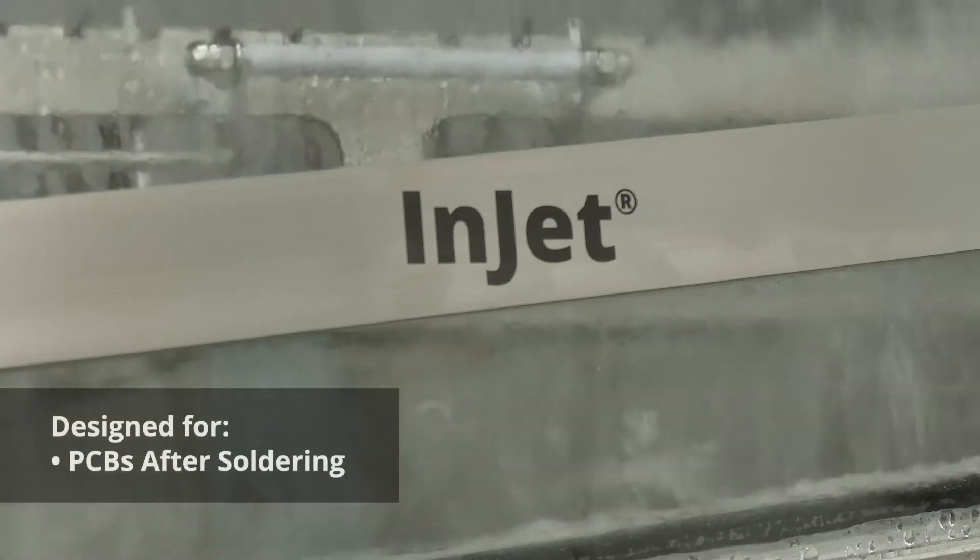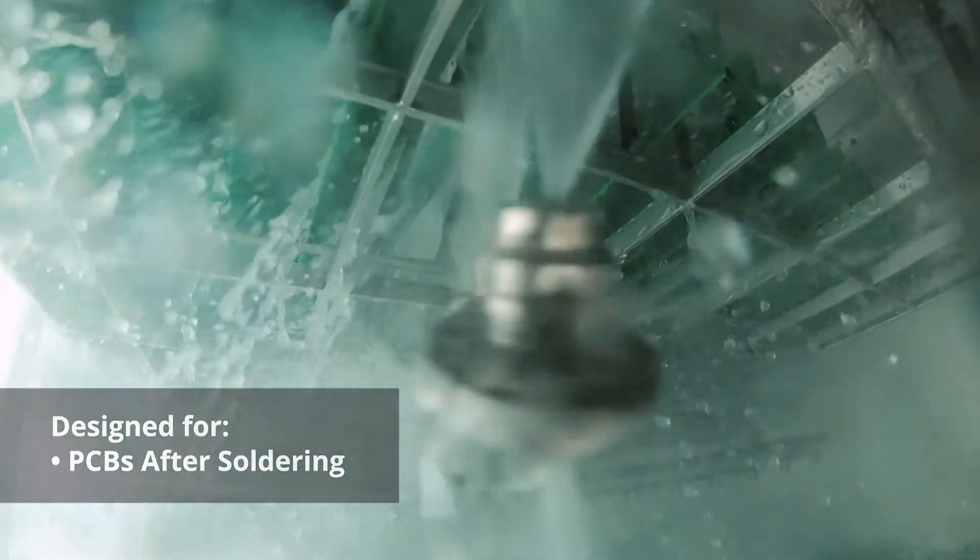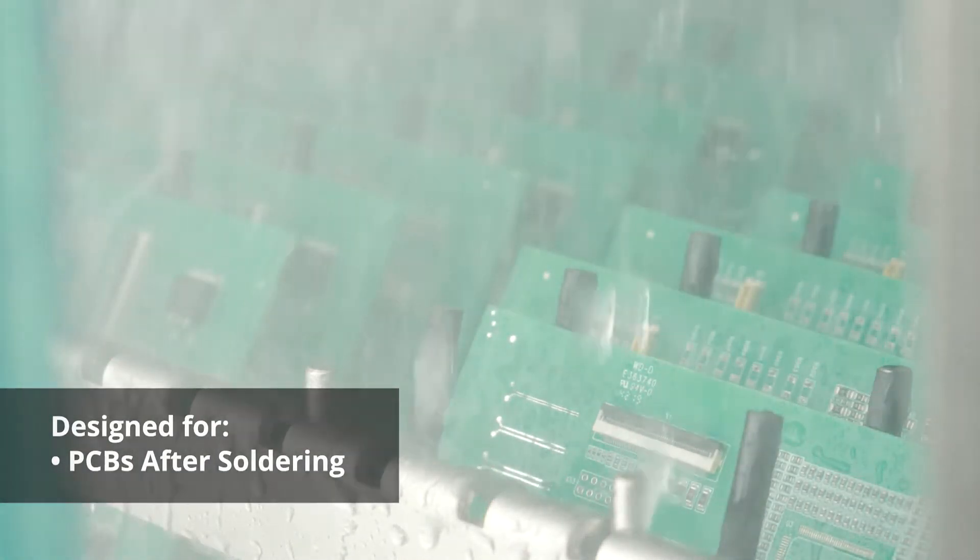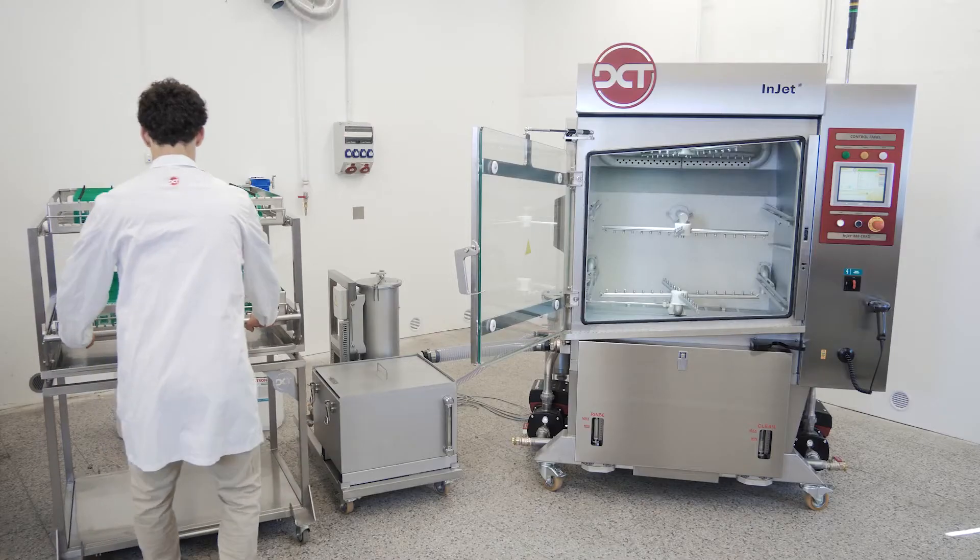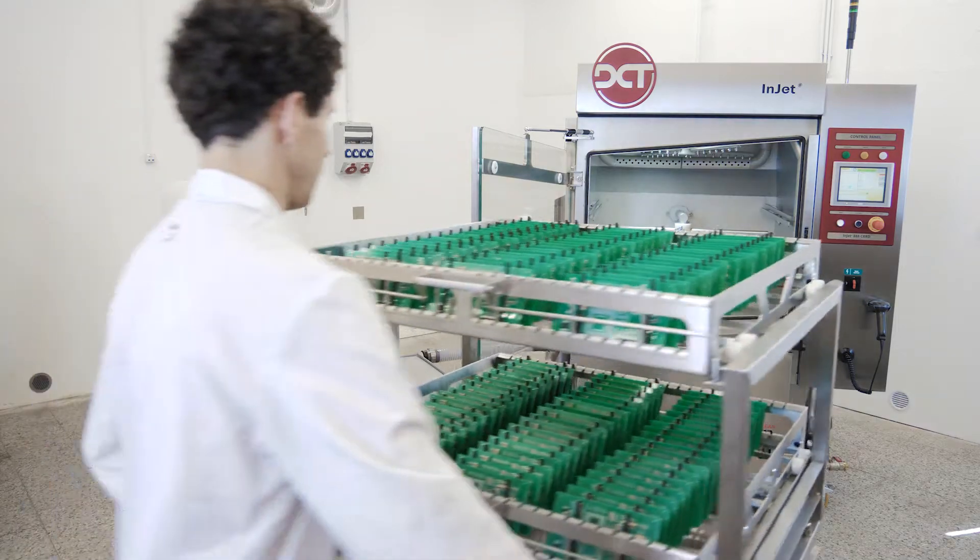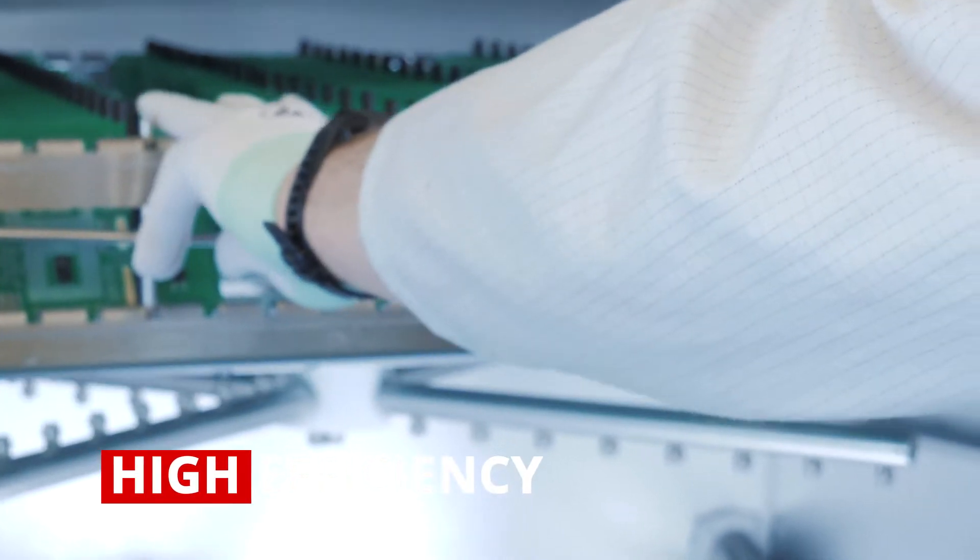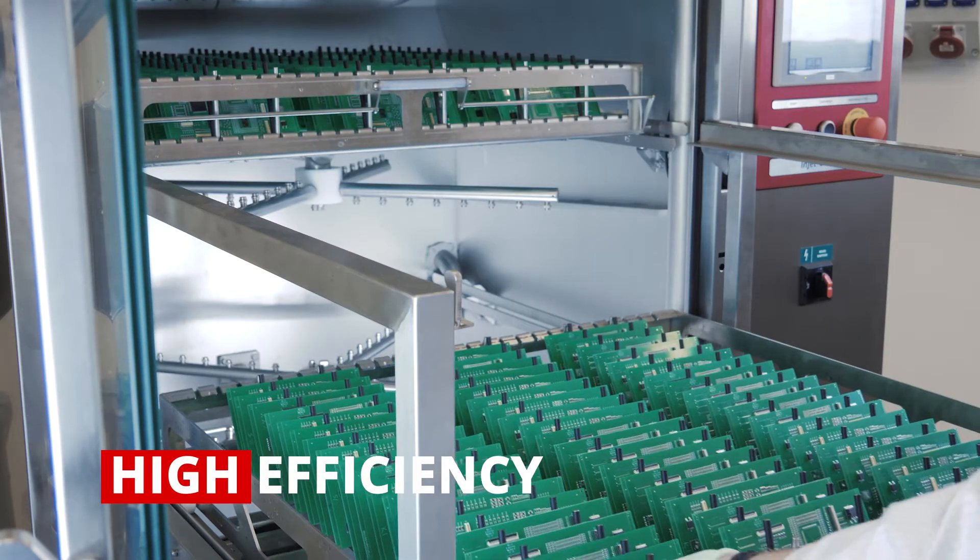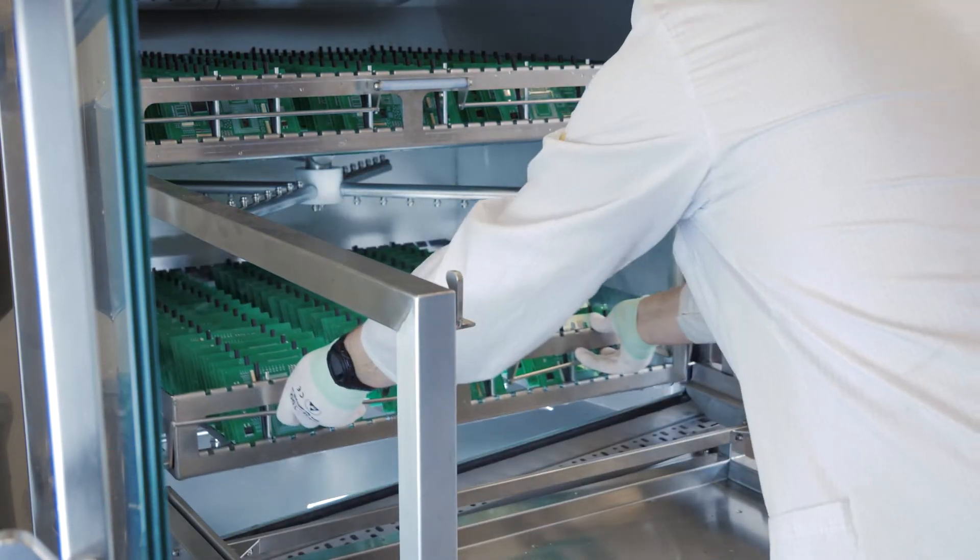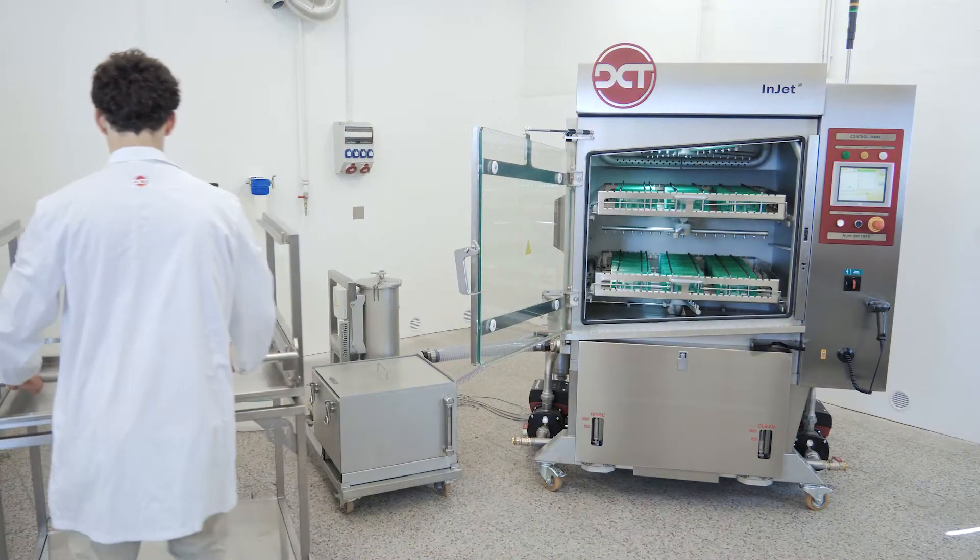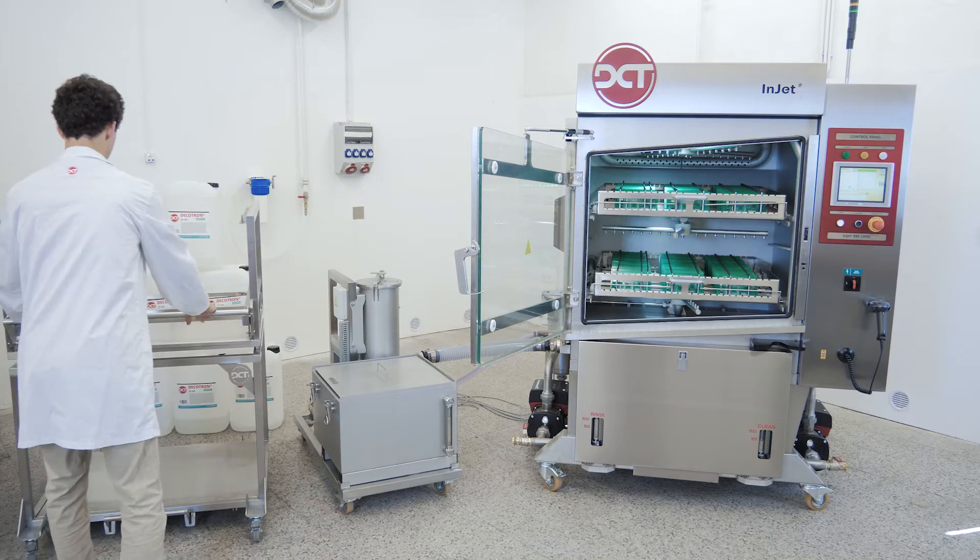INJET 888 is primarily designed for high-volume cleaning of flux residues from PCBs after soldering. The combination of spray in-air technology and horizontal layout secures the highest efficiency of the cleaning process. Maximizing efficiency is achieved by spraying cleaning fluid directly onto the component.